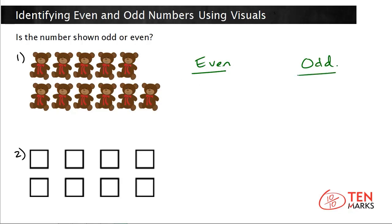Even numbers can be split into two equal groups with no leftovers. For example, the number 8 is even.